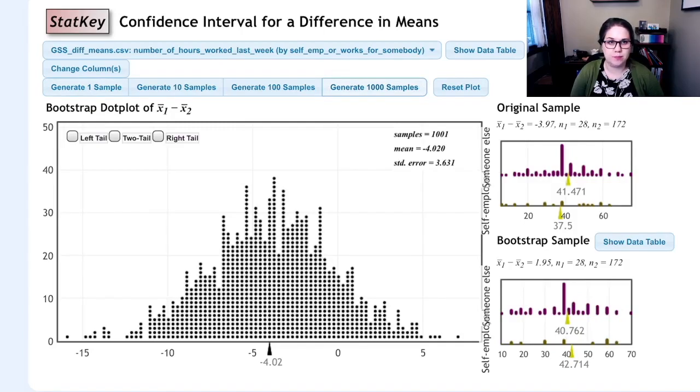This distribution is a bootstrap distribution. It's going to be centered around my observed sample statistic, in this case around -4.